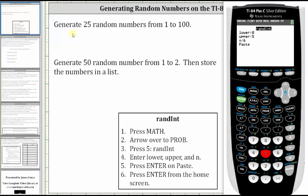Because we want 25 random numbers from 1 to 100, 1 is the lower bound, ENTER. The upper bound is 100, ENTER. And the number of random numbers is 25, ENTER. And then press ENTER on Paste.